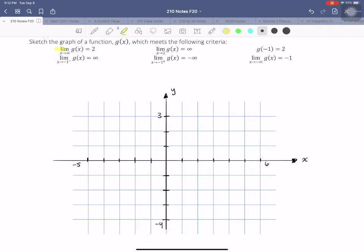So let's take a look at this first criteria. As x, as these x values grow off to infinity, we want this function to approach 2. So I'm going to pencil in some lines here. I know my function is going to kind of end off here in this direction.